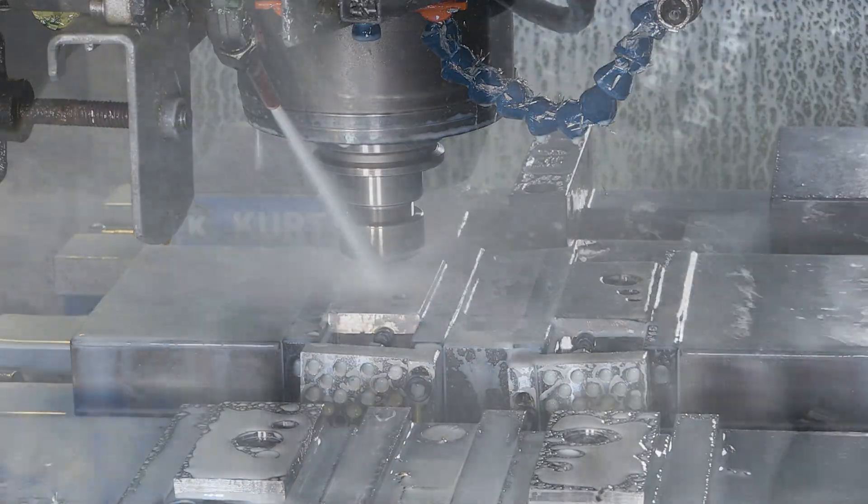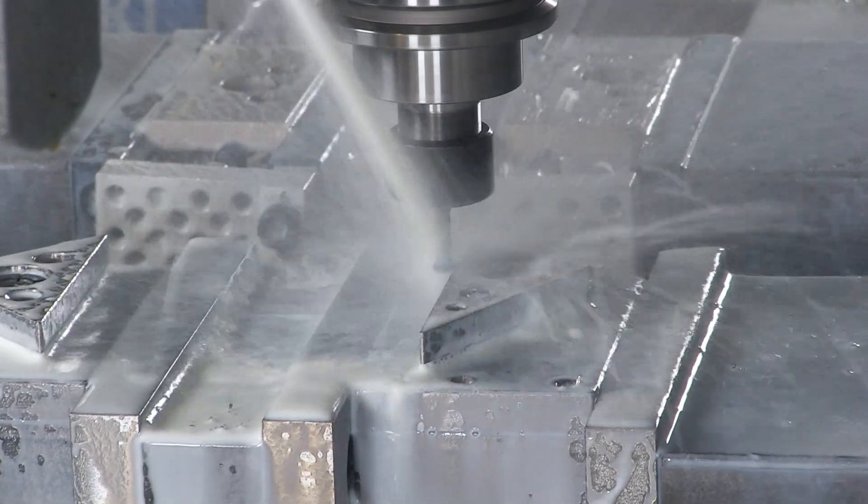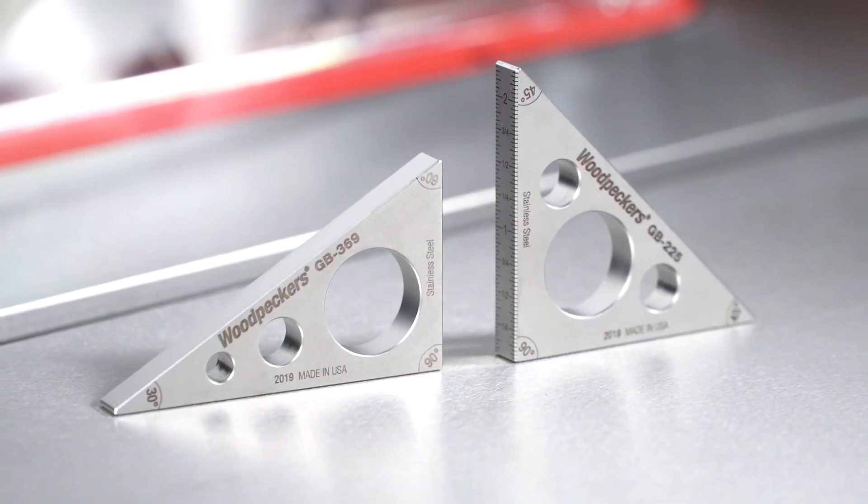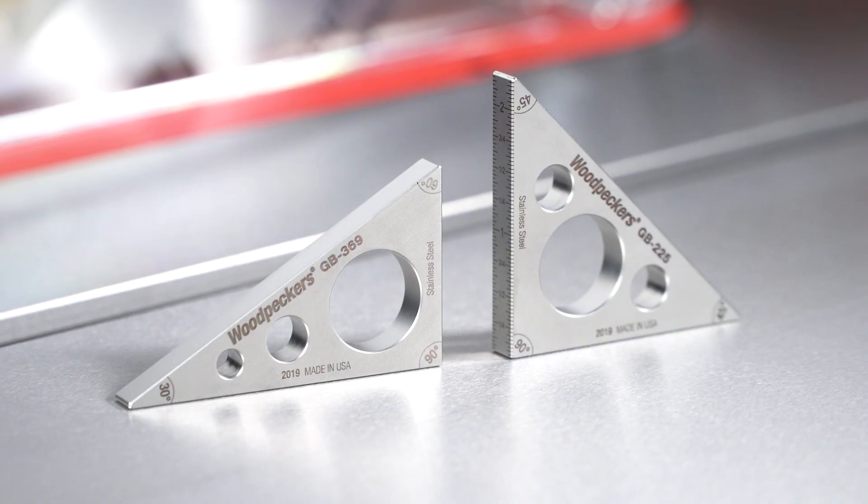Both gauges are precision-machined from a solid chunk of stainless steel, with the edges eased. And they're three-eighths of an inch thick, allowing them to stand on their own.